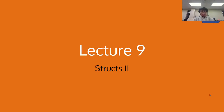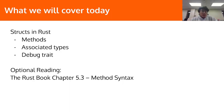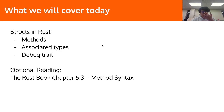Welcome everyone. Today we're going to talk about structs again and finish up the structs lecture continued from last week. What we'll cover today: we'll finish up structs in Rust, which includes methods, associated functions, and the debug trait. The optional reading is chapter 5.3 of the Rust book on method syntax. The lecture closely follows the textbook, so if you have trouble following, feel free to check that out as well.